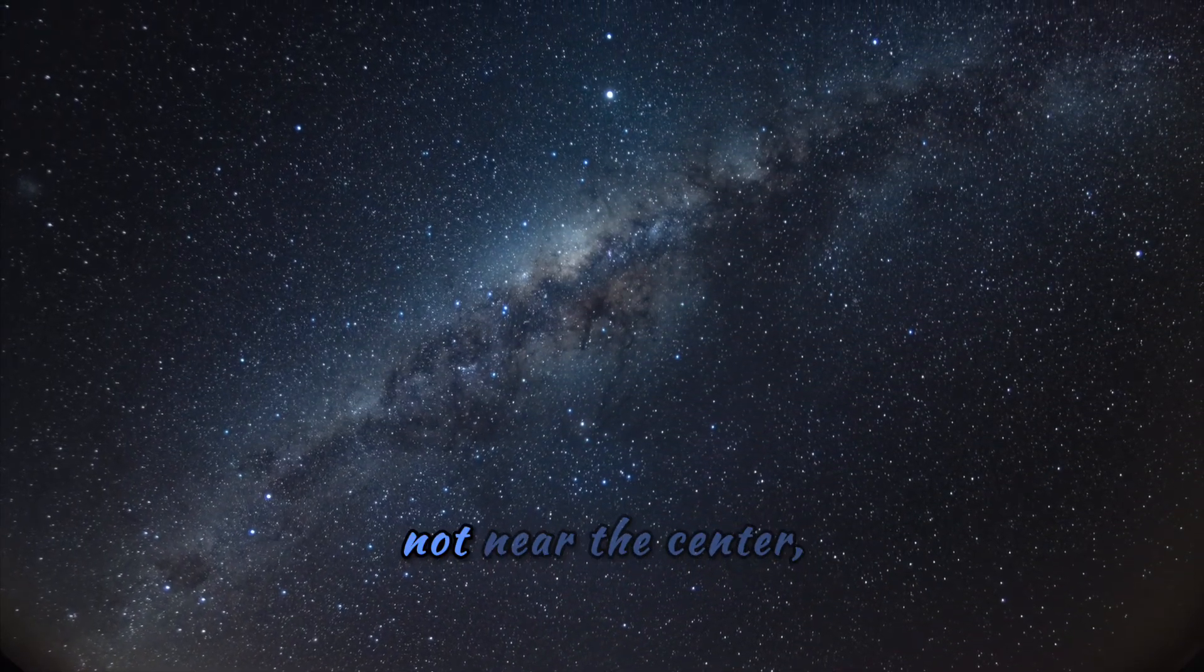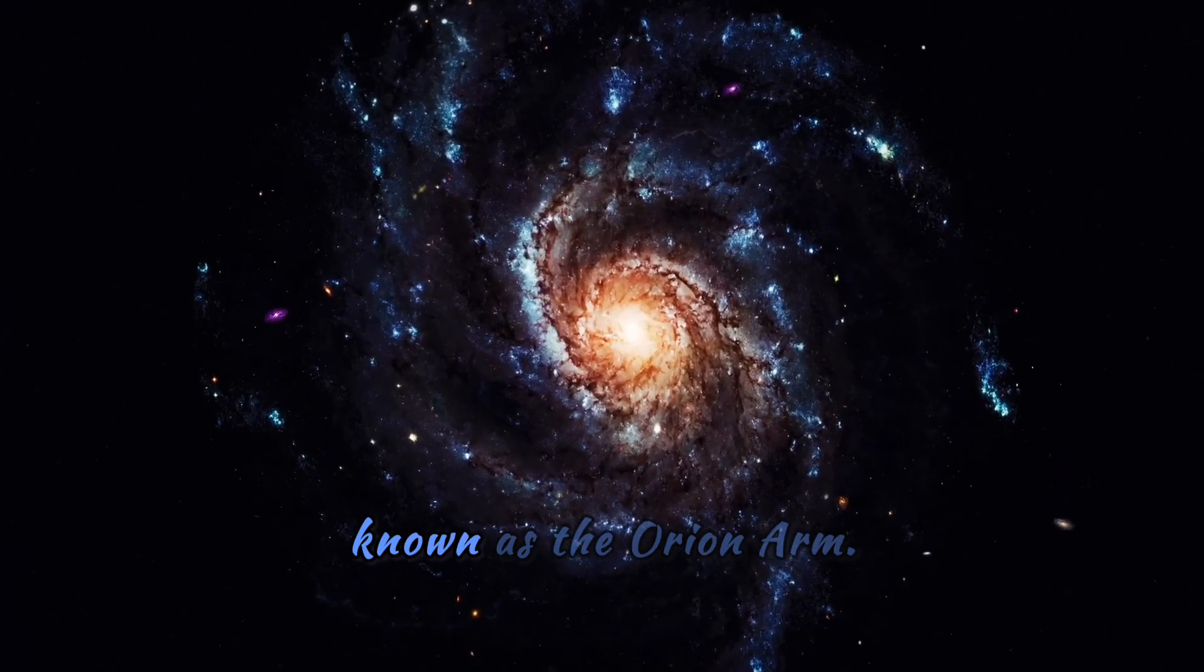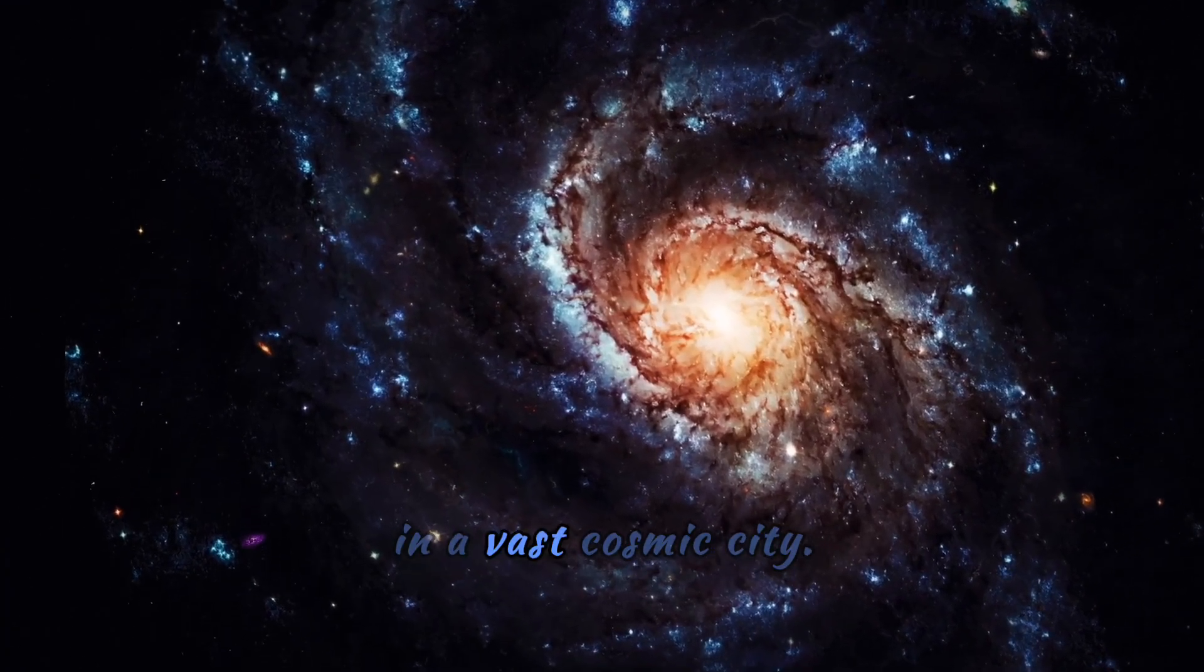Our solar system lies not near the center, but on the outskirts, in a region known as the Orion Arm, a small neighborhood in a vast cosmic city.